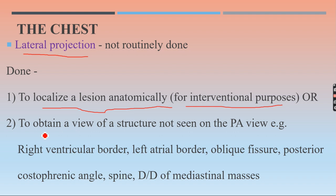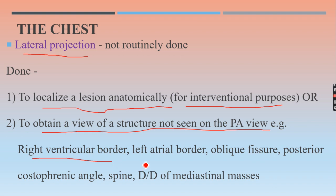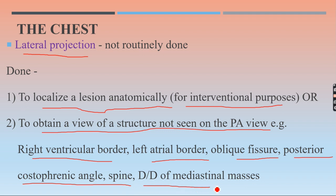Lateral projection is also used whenever we want to see structures not visible on the posterior-anterior view. The structures not seen on PA view include the right ventricular border, the left atrial border, the oblique fissure, posterior costophrenic angles, the spine, and for differential diagnosis of mediastinal masses — lateral projection X-rays can be ordered for these.